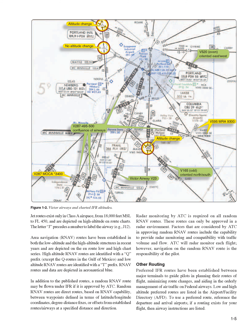Navigation on the random RNAV route is the responsibility of the pilot. Other routing—preferred IFR routes have been established between major terminals to guide pilots in planning their routes of flight, minimizing route changes, and aiding in the orderly management of air traffic on federal airways. Low- and high-altitude preferred routes are listed in the airport/facility directory, A/FD. To use a preferred route, reference the departure and arrival airports. If a routing exists for your flight, airway instructions are listed.